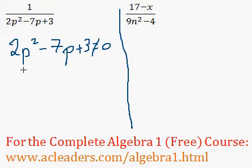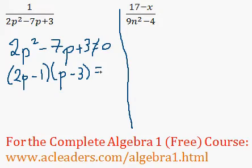Once we factor this, we obtain 2p minus 1 times p minus 3, which cannot equal 0.